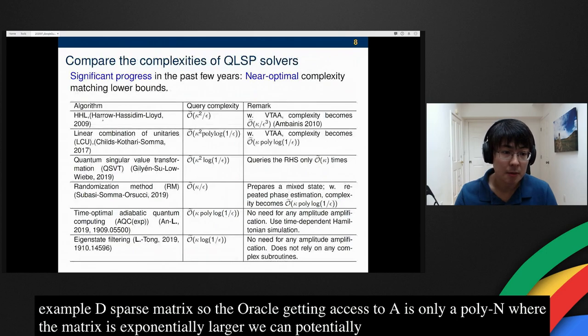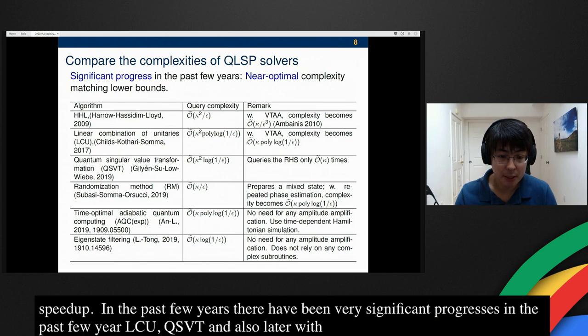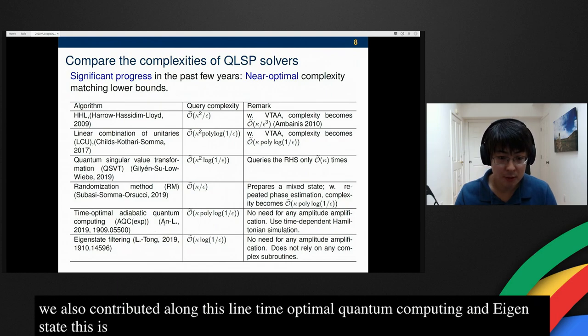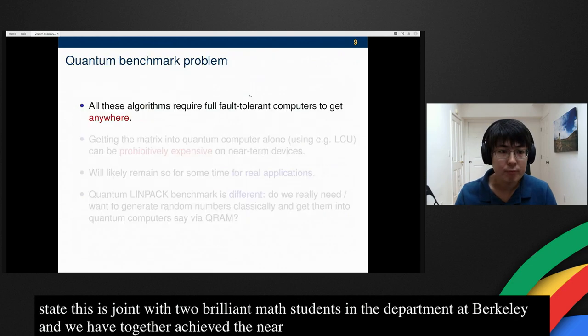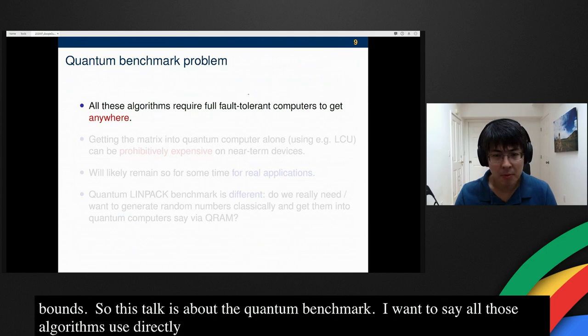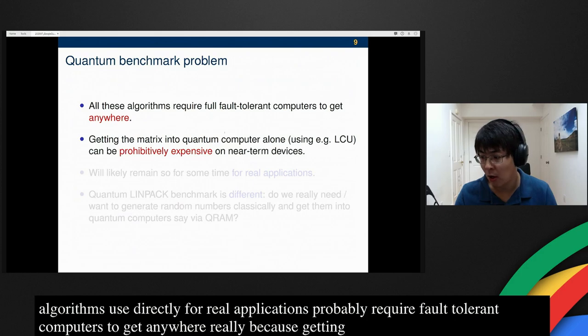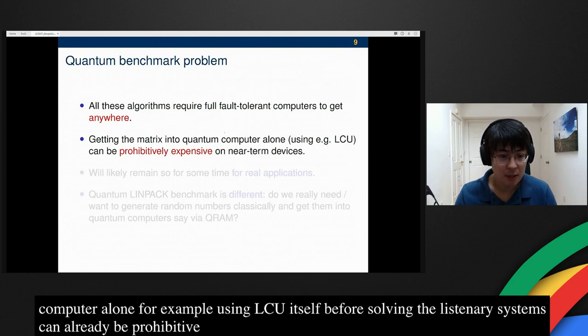In the past few years, starting from the groundbreaking HHL algorithm, there have been very significant progresses. LCU, QSVT, and also later we might hear about the randomization method by Rolando Soma and collaborators. We also contributed along this line called the time-optimal adiabatic quantum computing and eigenstate filtering. This is joint with the two brilliant grad students in the math department of Berkeley, Dongwa and Yutong. We have together achieved the near-optimal complexity matching the lower bounds. All those algorithms used directly for real applications will probably require full fault tolerant quantum computers to get anywhere. This is really because getting the matrix into the quantum computer alone, for example, using LCU itself before solving the linear system, can already be prohibitively expensive on near-term devices and will likely remain so for some time.